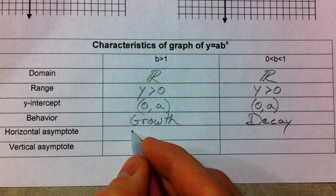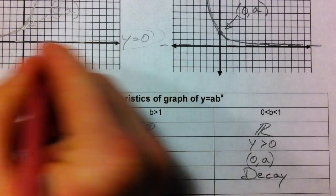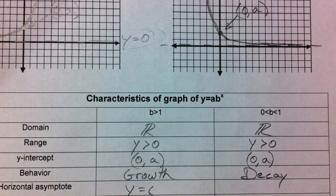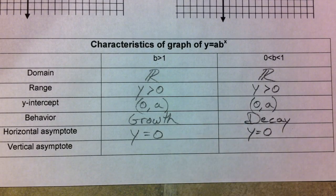Horizontal asymptote. I already mentioned that. Labeled it up here. y equals 0. That is not always going to be the case, as we'll see in the next video, because we're going to be going up and down with that. We're going to be shifting it up and down.